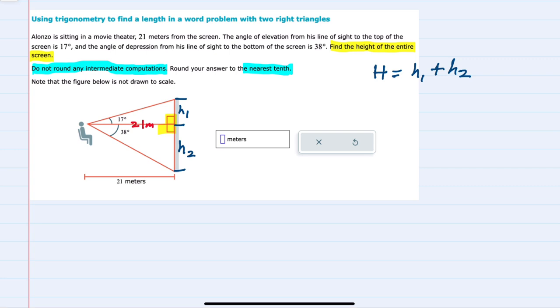And with that, we can start by looking at the top triangle, the one where we have that 17 degrees. And from here, the 21 is adjacent to the angle, and our h1 is opposite. Opposite and adjacent means we'll use tangent.